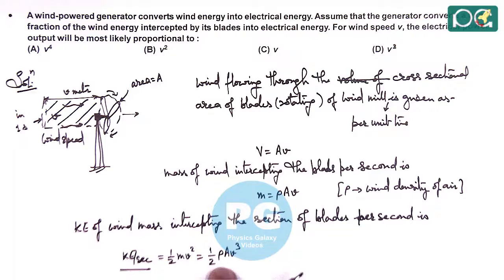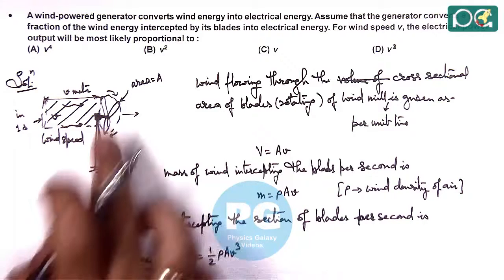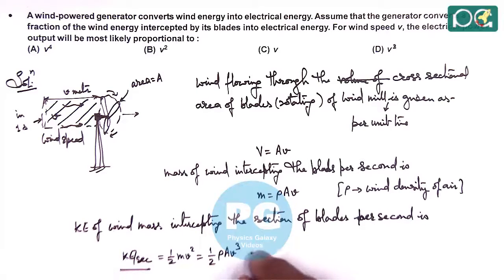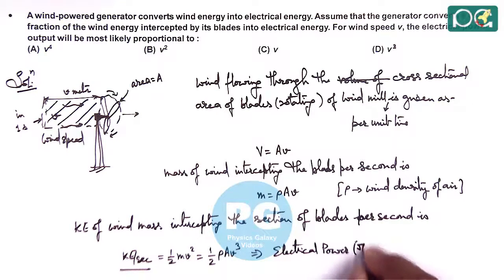So this will be transformed, or a fraction of this will be transformed into electrical power. So this implies here we can write electrical power which is generated in joule per second or in watts is proportional to this value, and this is proportional to V cubed which matches with option D. So the answer to this question is option D.